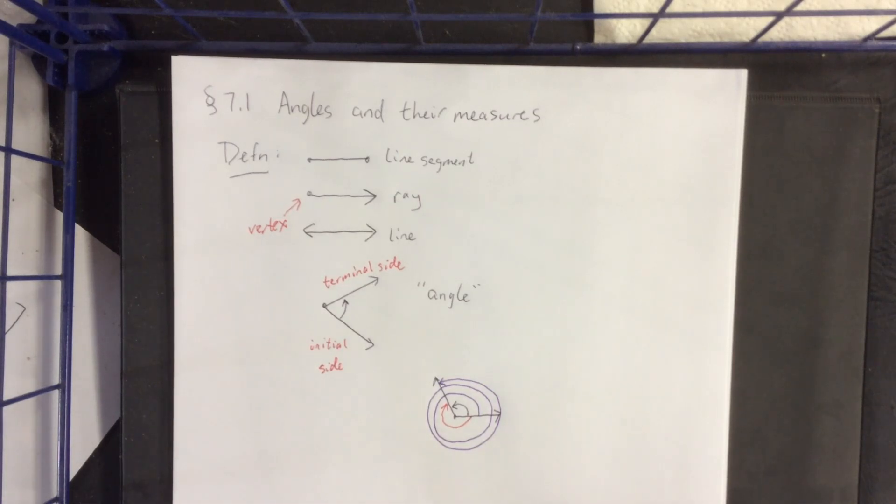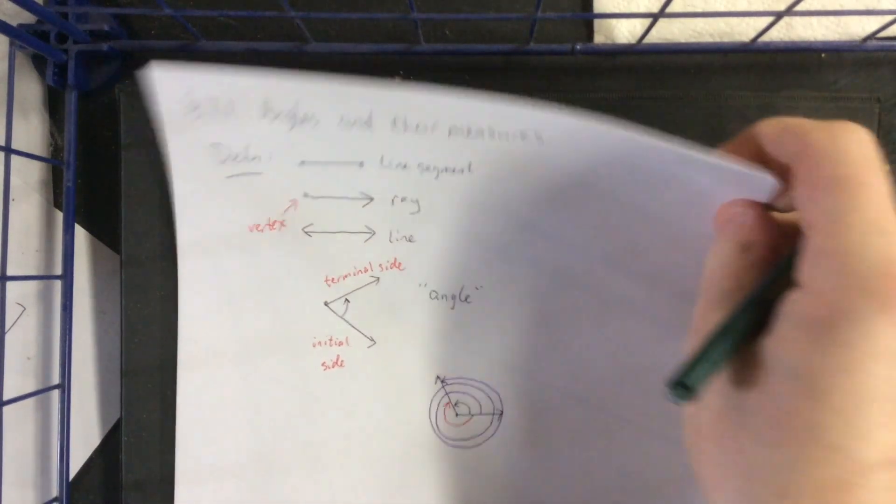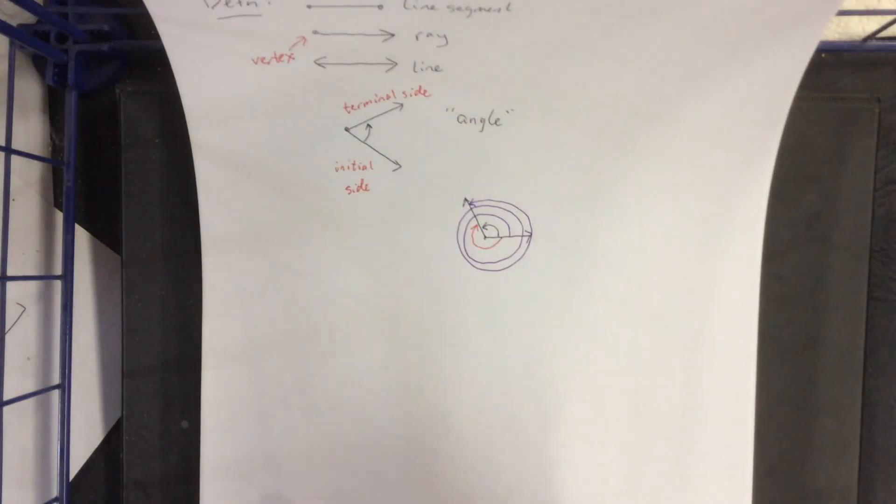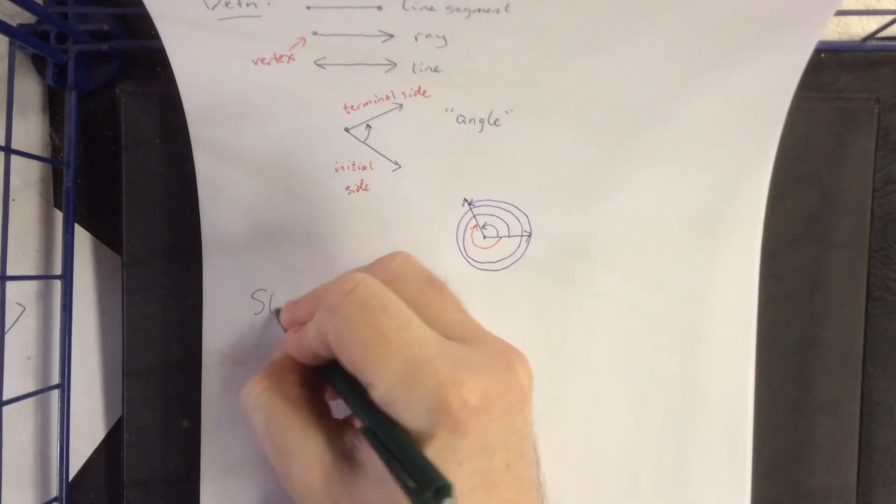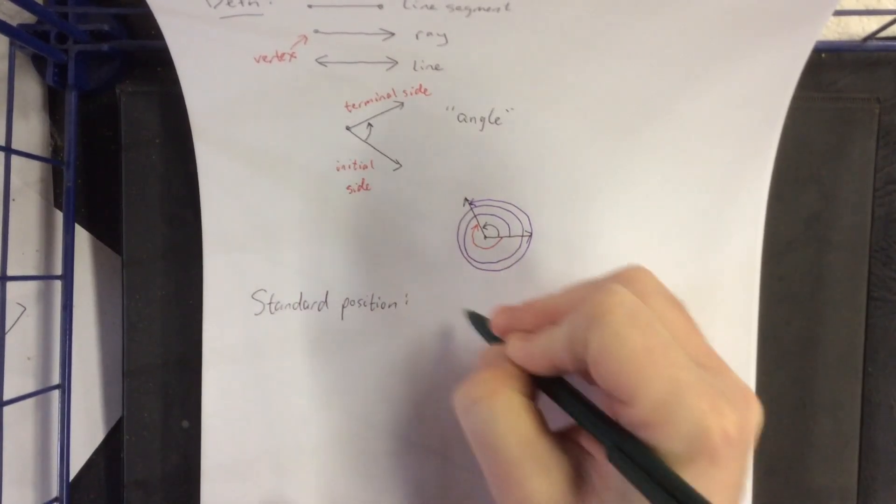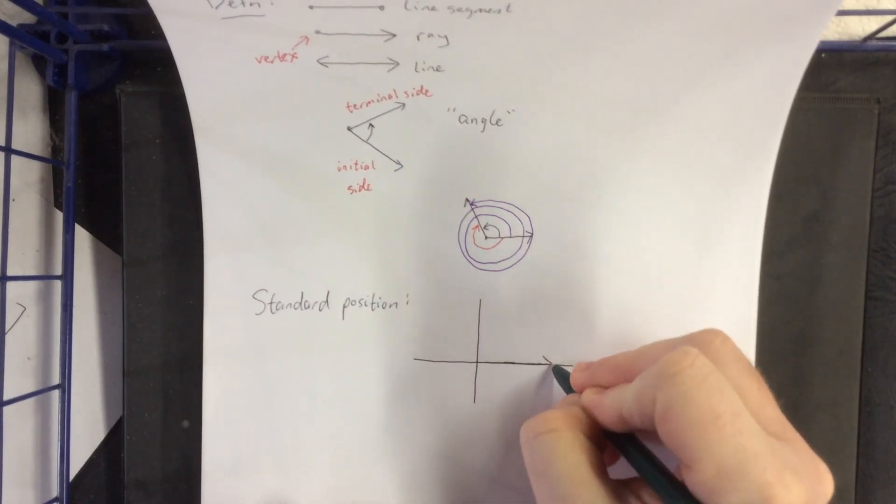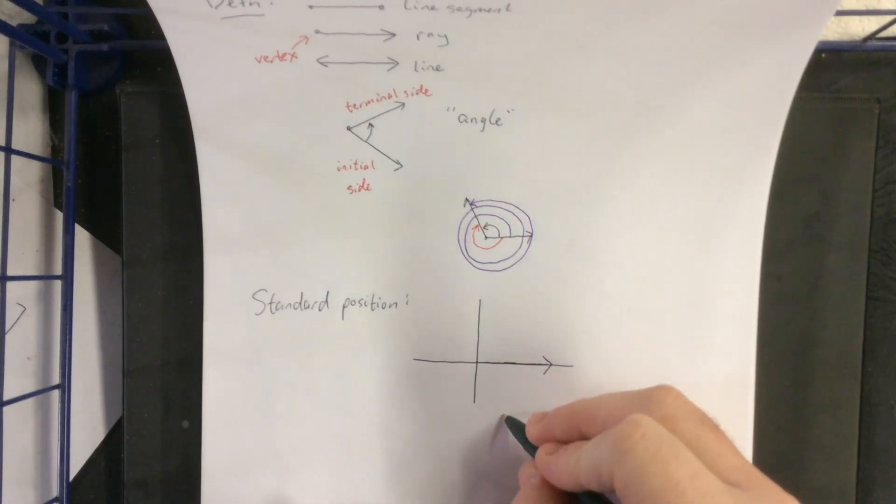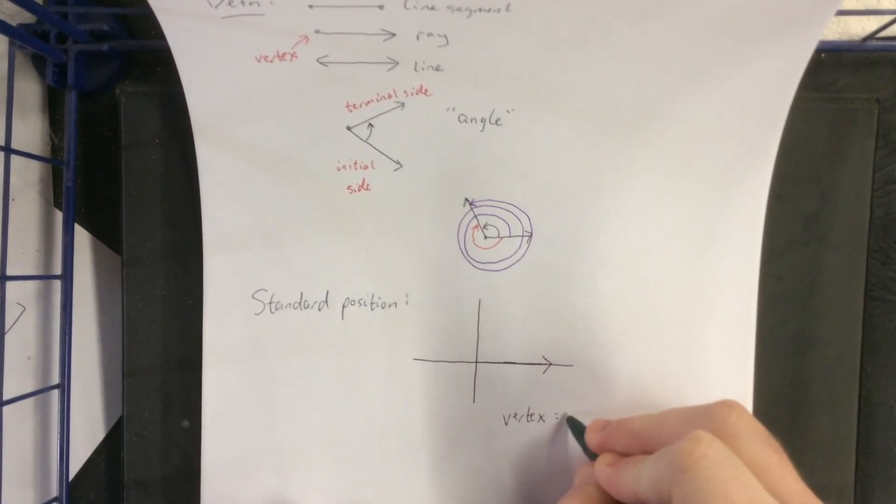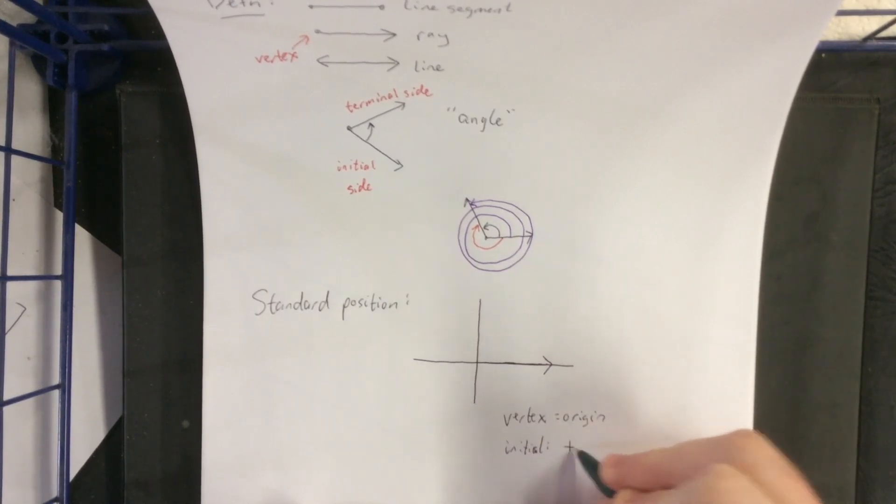Now, with that in mind, the majority of the angles that we're going to be dealing with are going to be called angles that are in standard position. So this is going to involve something in the Cartesian plane. So standard position is when an angle is put into the Cartesian plane, where the initial side is always going to be the positive x-axis. The vertex is going to be at the origin. So vertex equals origin. And initial side is going to be the positive x-axis.